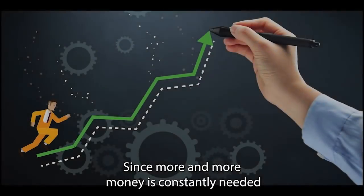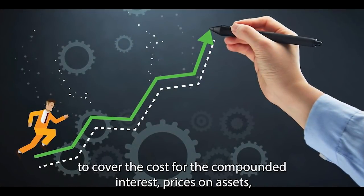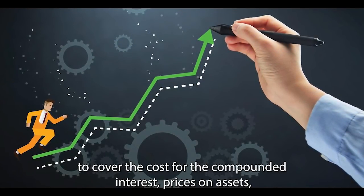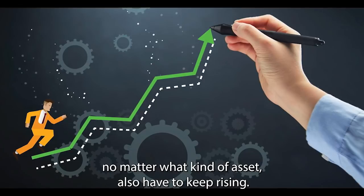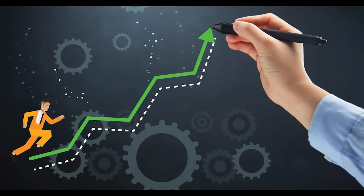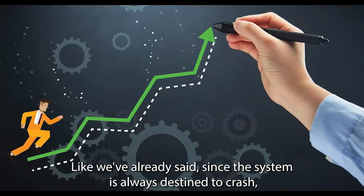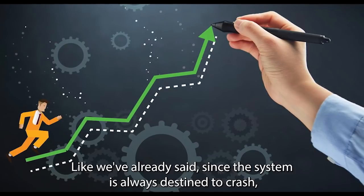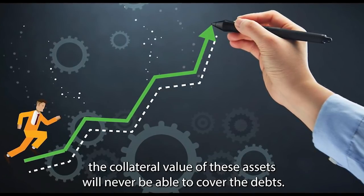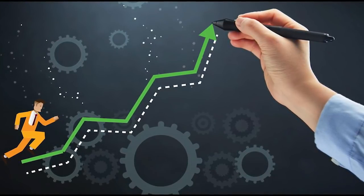Since more and more money is constantly needed to cover the cost for the compounded interest, prices on assets — no matter what kind of asset — also have to keep rising. And since the system is always destined to crash, the collateral value of these assets will never be able to cover the debts.